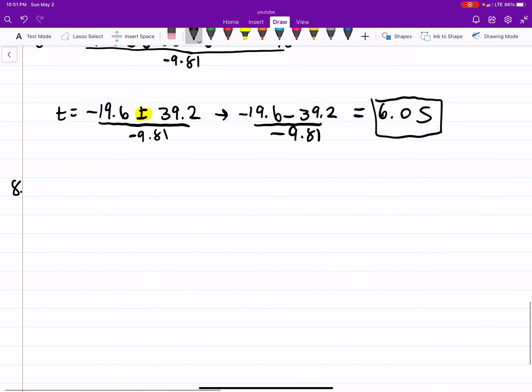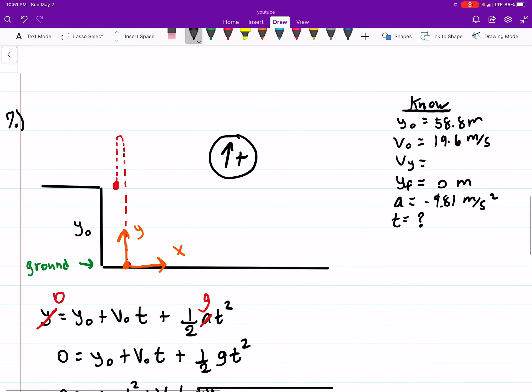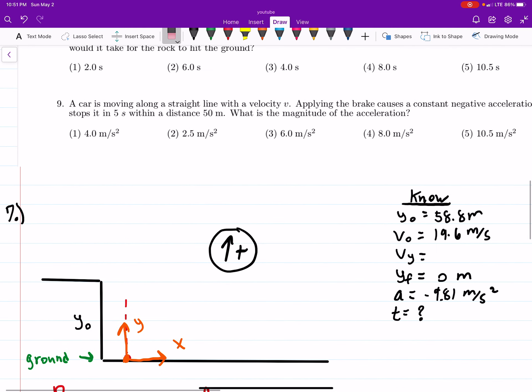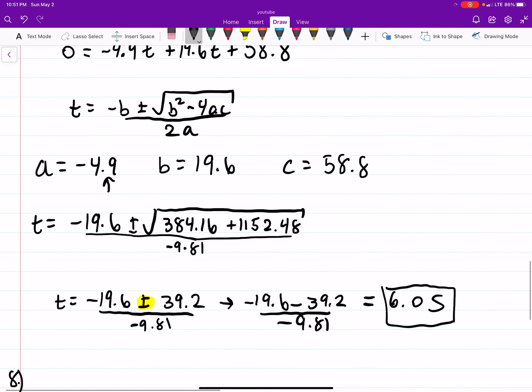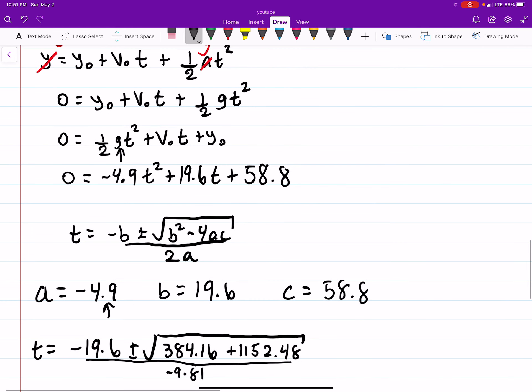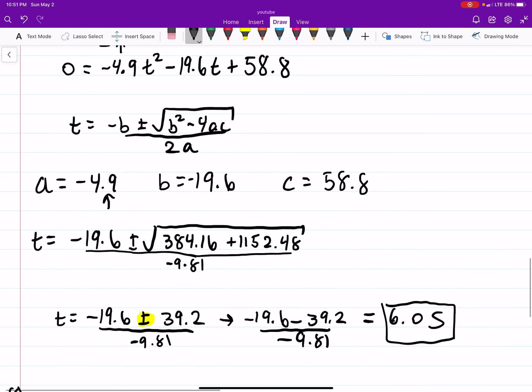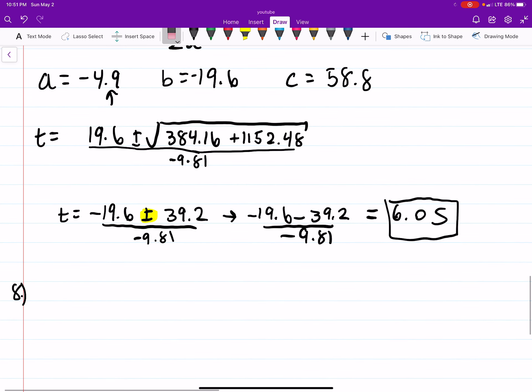Now for question 8, it's very similar. The only difference with 8 is now the ball is being thrown straight down. So what that means is your velocity is going to be negative. So all that's happening here is basically a sign change. This is now going to be negative. When we square the negative, it's still going to be positive, so that's not going to change anything.